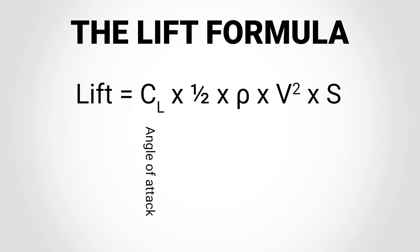The coefficient of lift can be regarded as the angle of attack. Half is a constant. Rho refers to the density of the air, which will change with the atmosphere of the day. Velocity squared refers to airspeed. And surface area refers to the total area of the main rotor blades.